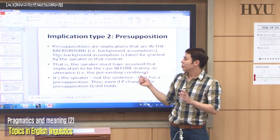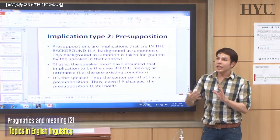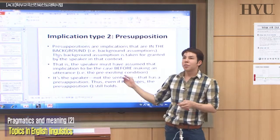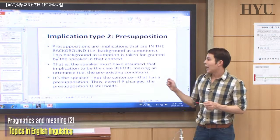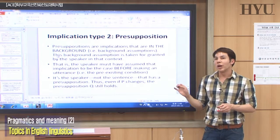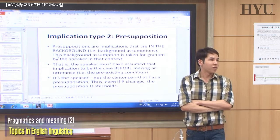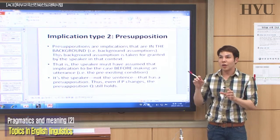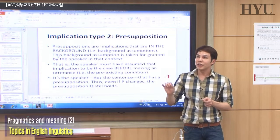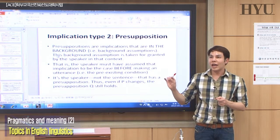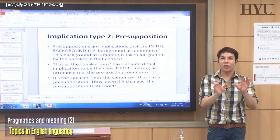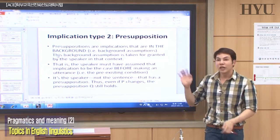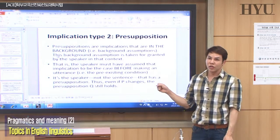The speaker must have assumed something to be true before saying a statement. And it's the speaker, not the sentence, that has the presupposition. This is the point where presupposition is different from entailment — presupposition is the speaker's assumption, whereas entailment is the meaning that comes from two statements being in a relationship.